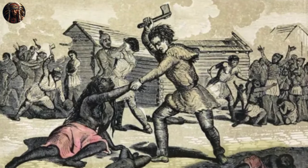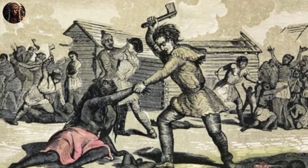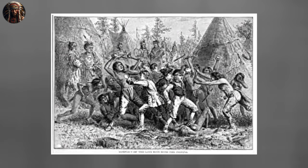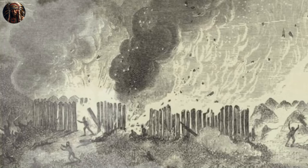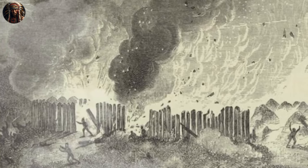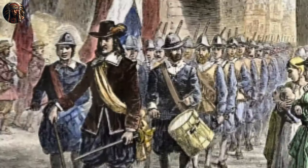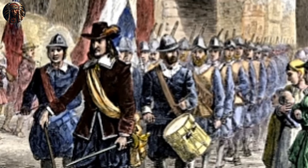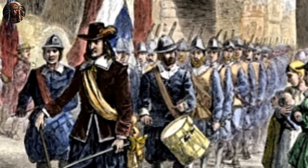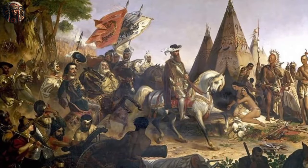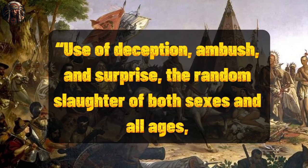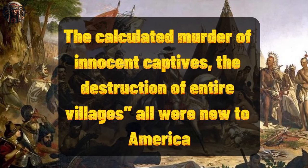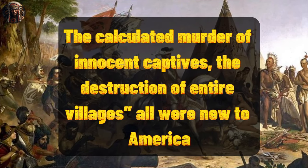Shortly afterward, while returning to Jamestown, the children's mother was executed, likely by Davis. The Waraskoyaks and Chickahominies — the latter not members of Powhatan's paramount chiefdom — also were attacked. After the Waraskoyaks fled, the colonists burned two of their villages and harvested the remaining corn. During the First Anglo-Powhatan War, the English brought to Virginia terror tactics perfected in Ireland: their use of deception, ambush and surprise, the random slaughter of both sexes and all ages, the calculated murder of innocent captives, the destruction of entire villages — all were new to America.